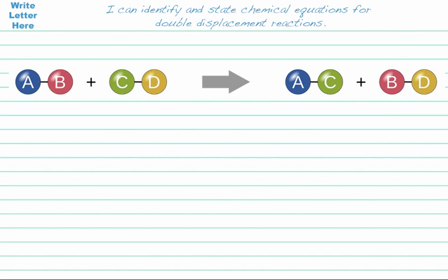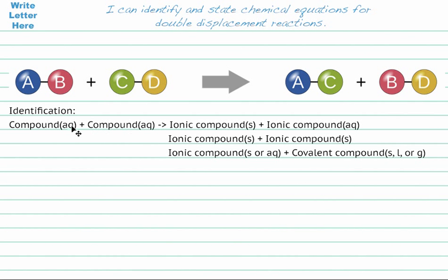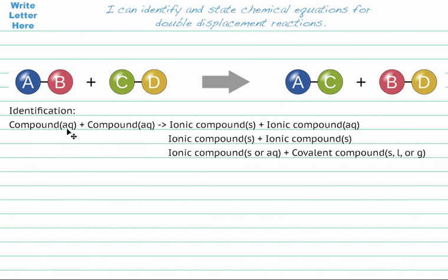If we are looking to identify this type of reaction, we're looking for compound plus compound. Both compounds in the reactants must be soluble in water — in other words, they must be able to dissolve in water. To show that, we write AQ. If it can't be dissolved in water, we leave it as solid, because ionic compounds are all solid.